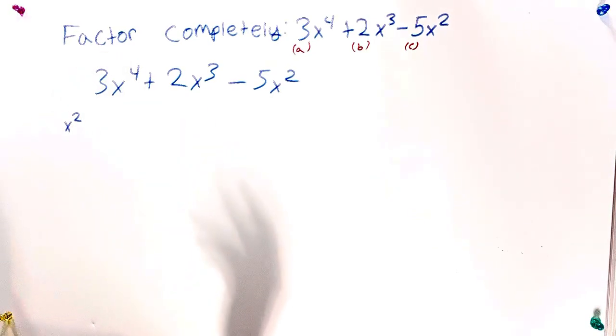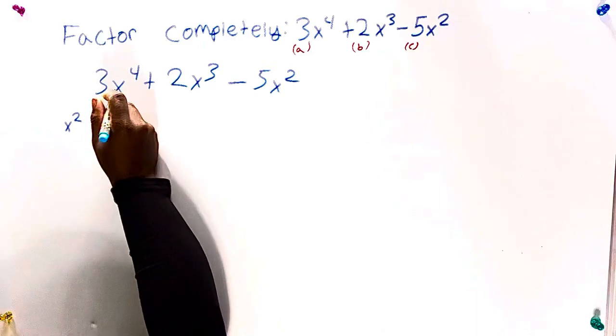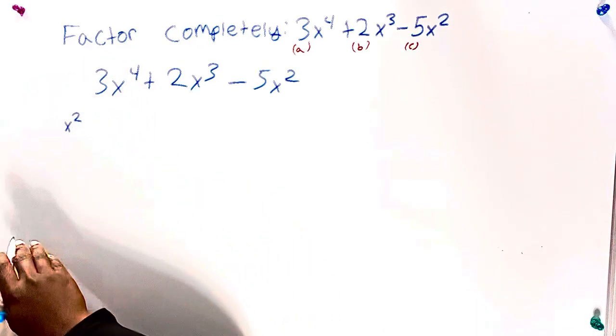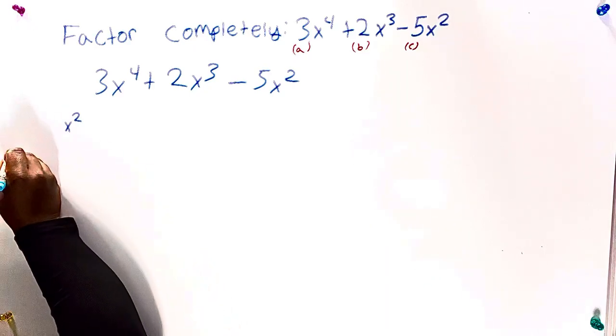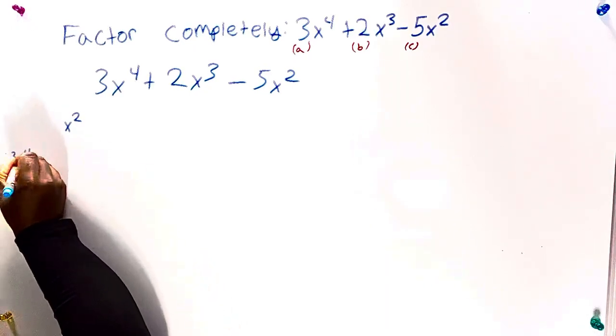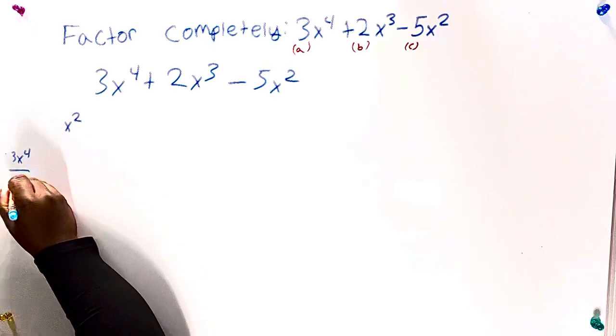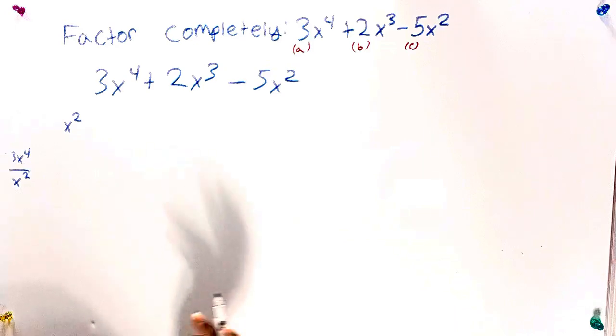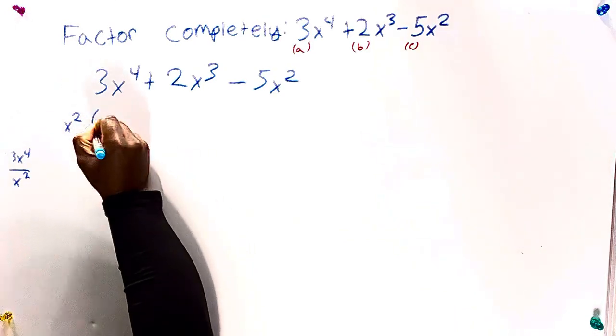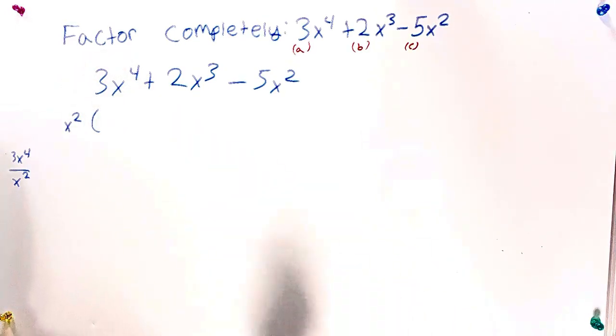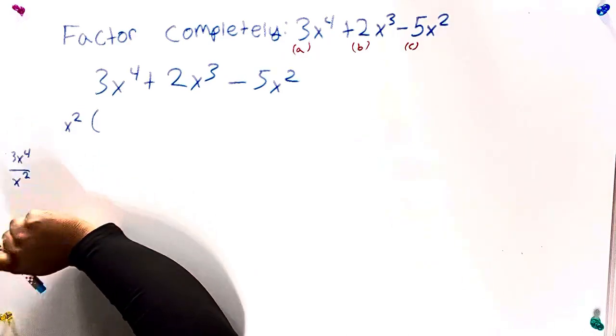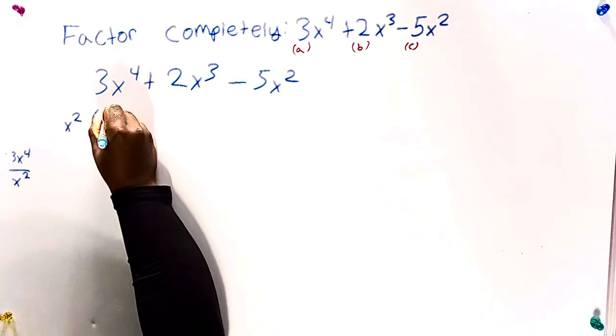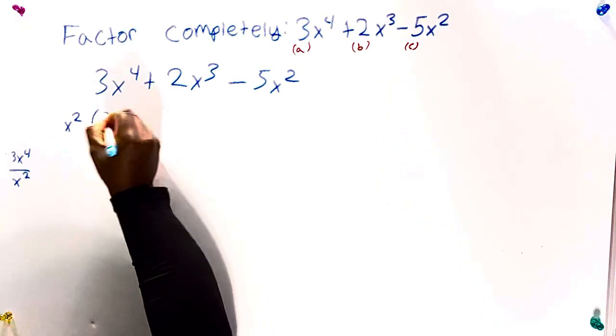So now you got to think about it as 3x to the fourth divided by x squared. And the way you can do that is, I will jot it down on the side. So we'll have 3x to the fourth over x squared. 3 divided by the invisible one would give us just 3. Then we have x to the fourth divided by x squared. That should just give us x to the second. So this should be 3x to the second.